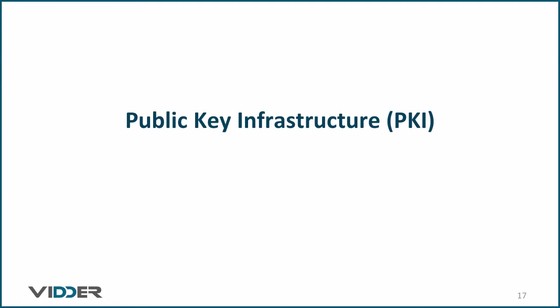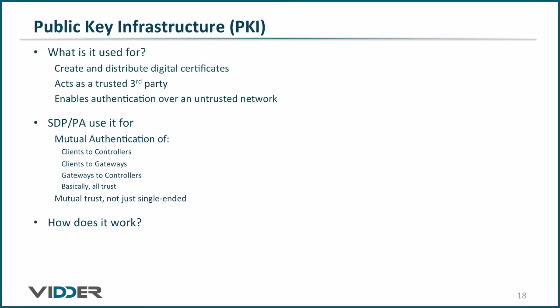In this video you will learn quite a bit about public key infrastructure and how it is used to authenticate clients and servers. The purpose of public key infrastructure is to create and distribute X509 digital certificates to trusted entities and then to act as a trusted third party, such that each of the entities trust the third party. Therefore each entity should trust each other. Basically it enables cryptographic authentication over an untrusted network.